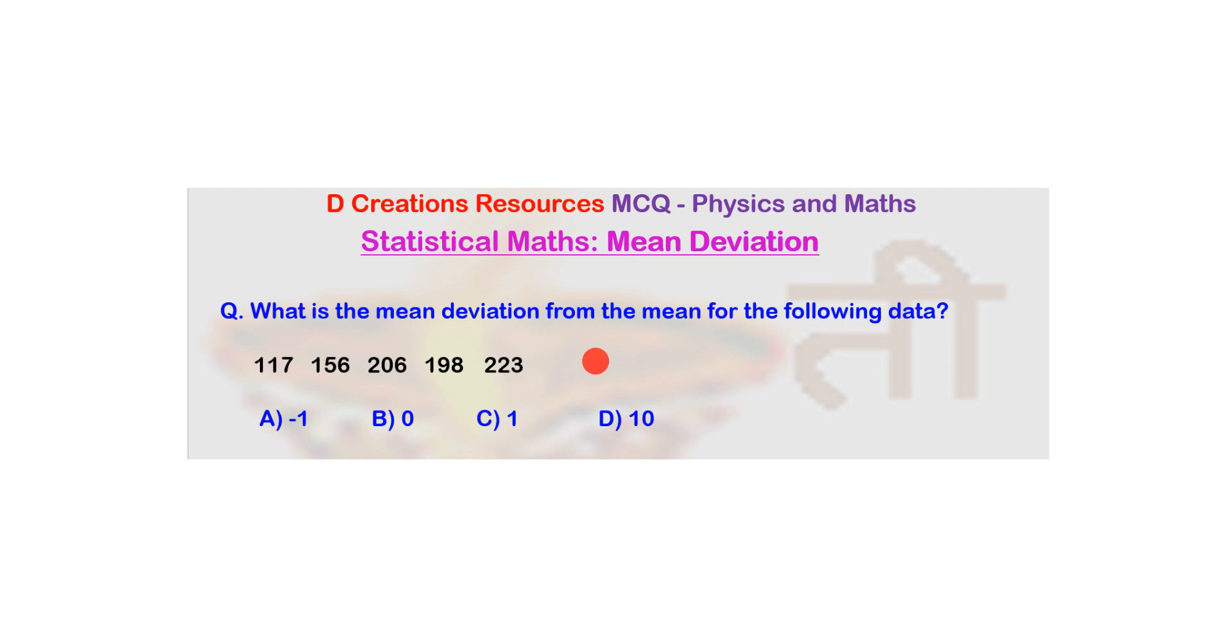The question is what is the mean deviation from the mean for the following data? The data has been given. Five points have been given: 117, 156, 206, 198, and 223.